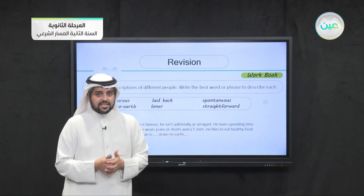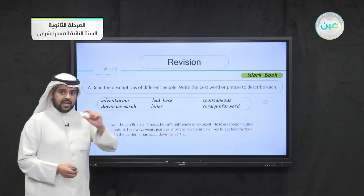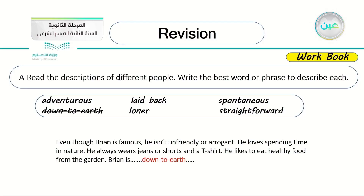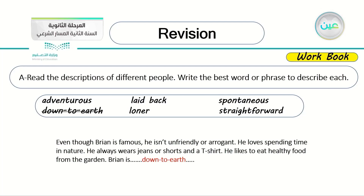The first exercise says: read the descriptions of different people and write the best word or phrase to describe each. The first one is already done for you. Even though Brian is famous, he isn't unfriendly or arrogant — this is a double negative which makes it a positive, so he is friendly. He loves spending time in nature, always wears jeans or shorts and a t-shirt, and likes to eat healthy food from the garden. So Brian is down to earth — he is humble, he is a people person.